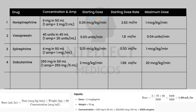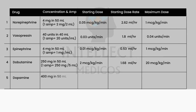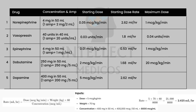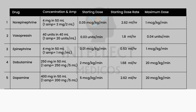Dopamine is not commonly used nowadays but worth knowing. One ampule has 200 mg in 5 ml; take two ampules — 400 mg in 50 ml. Starting dose is 5 mcg/kg/min, where it acts on beta-1 receptors causing cardiac contraction. Above 10 mcg/kg/min it acts on alpha receptors causing vasoconstriction. Maximum dose is 20 mcg/kg/min. Note that dopamine carries a high risk of causing arrhythmia, which is why it is largely avoided in current clinical practice.